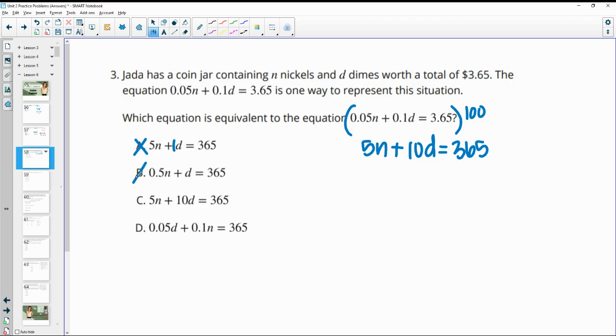So then we can see that b would be wrong because we have 365 with a 0.5 and a 1. C, we have 5 per nickel, 10 per dime equals 365. That's the equation we just wrote here. And then d would be wrong because it moved to the 3.65 to 365.